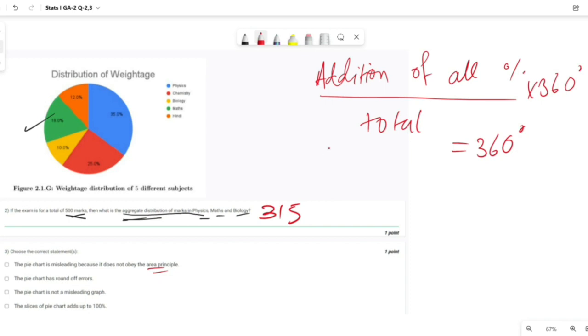Which means addition of all percentage should be equal to 100%. This is the conclusion of area principle. So let us add: 35 plus 25 plus 10 yellow, plus 18 green, plus 12 orange.